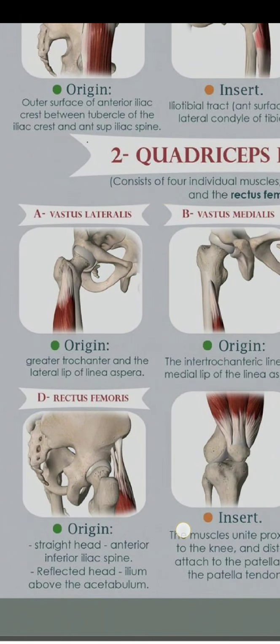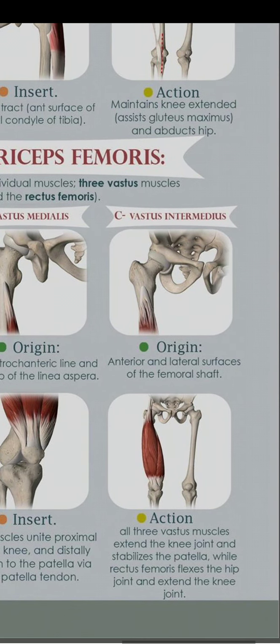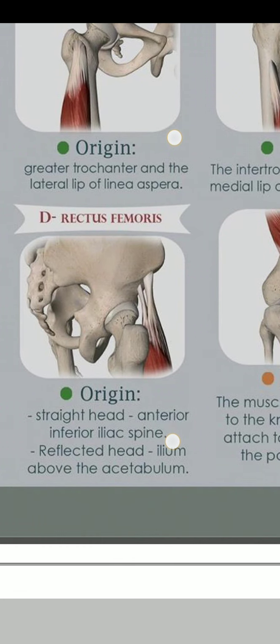The Vastus Lateralis originates from the greater trochanter and the lateral lip of the linea aspera. The Vastus Medialis originates from the intertrochanteric line and the medial lip of the linea aspera. The Vastus Intermedius originates from the anterior and lateral surface of the femoral shaft.